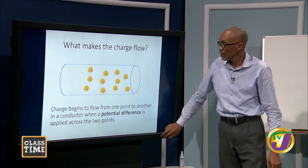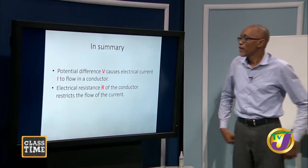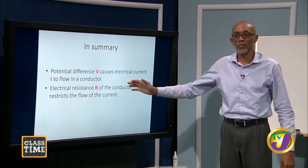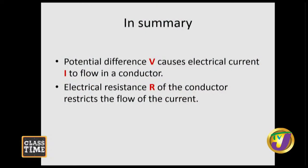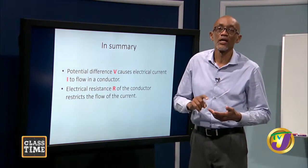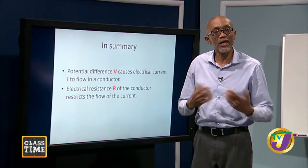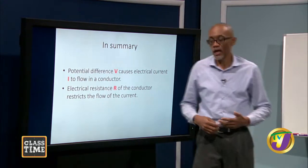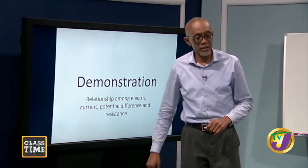So far we have looked at electric current, resistance, and potential difference. In summary: potential difference V causes electric current I to flow in a conductor. Electrical resistance R of the conductor restricts the flow of the current. We have three interrelated quantities: potential difference, resistance, and current. We will look at how they are interrelated and do a short demonstration.